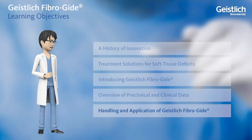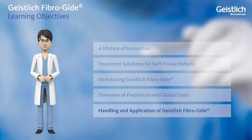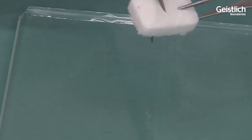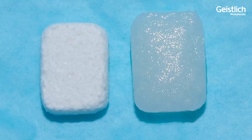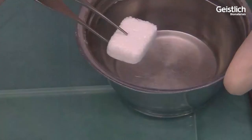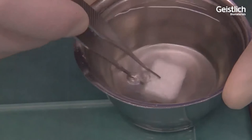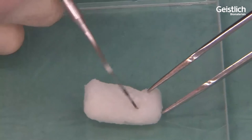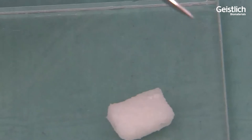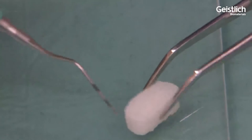Now that we understand the capabilities of Geislik FiberGuide, let us examine the physical and handling characteristics of the material. Please additionally refer to the product's instructions for use. The Geislik FiberGuide Collagen Matrix is meant to be customized to adapt to the soft tissue defect and can be placed into the surgical site in either a dry or wet state. Hydrating the material is best done with sterile saline solution or the patient's blood. Due to its porous structure, Geislik FiberGuide is highly hydrophilic, meaning that it will undergo substantial volumetric swelling of around 25% once hydrated.